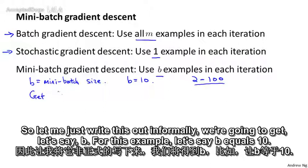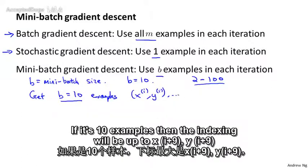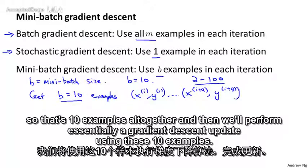We're going to get, let's say, b equals 10. So we're going to get the next 10 examples from my training set. So that may be some set of examples, x_i, y_i. If it's 10 examples, then the indexing would be up to x_{i+9}, y_{i+9}. So that's 10 examples all together.